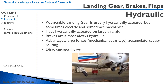Retractable landing gear are usually hydraulically actuated, but sometimes they're electric and sometimes mechanical — you just pull a lever or use a ratchet to ratchet them up, though that's pretty rare. On large aircraft, flaps are typically hydraulically actuated and brakes are almost always hydraulic. The advantage of hydraulics is a big mechanical advantage — you have large forces, a series of accumulators, and easy routing. It's very easy to run a hydraulic line compared to a series of cables and pulleys.